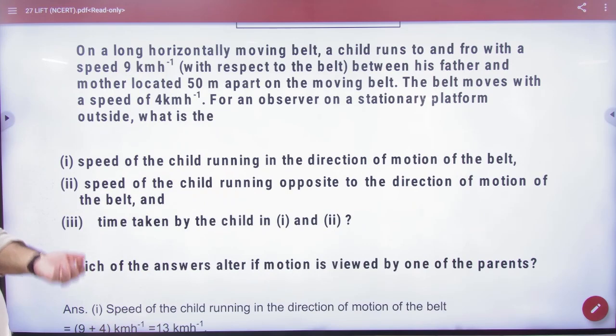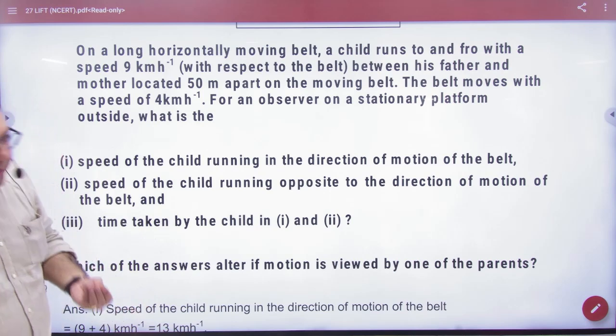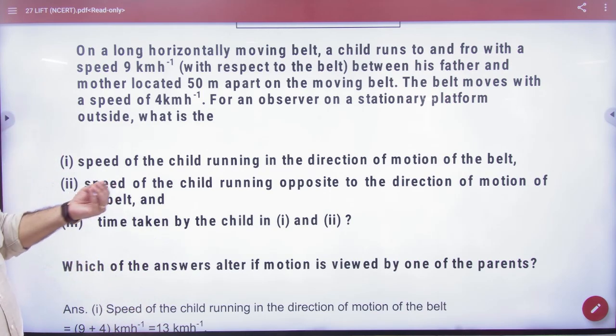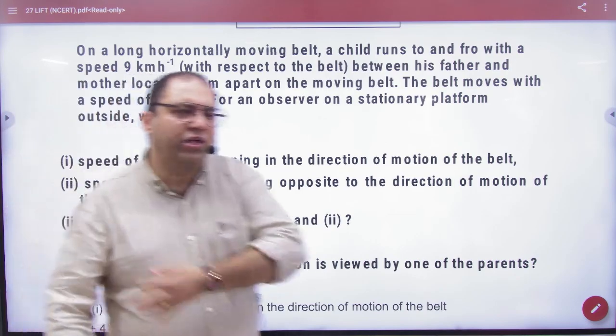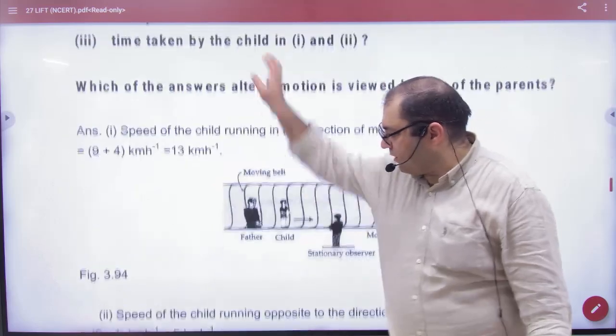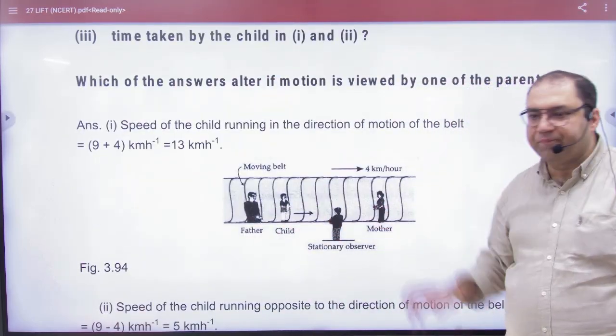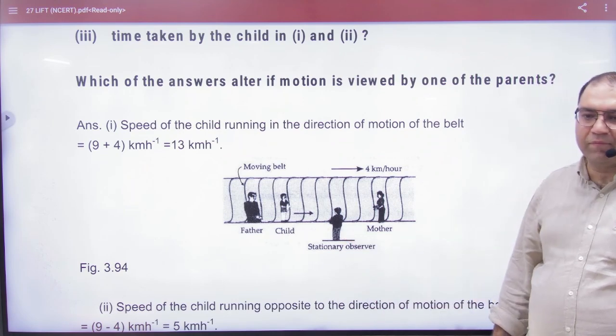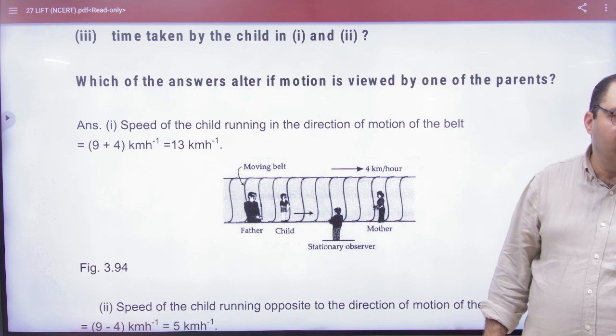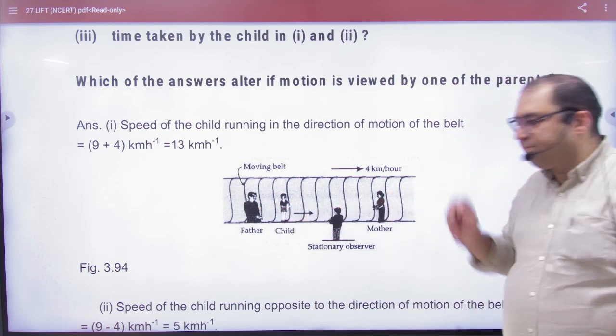A child runs to and fro with a speed of 9 km per hour with respect to the belt between his father and mother located 50 meters apart on the moving belt. So a belt is going, father here, mother, and a child. This is you who are watching. So this is 50 meters apart, the belt is moving.